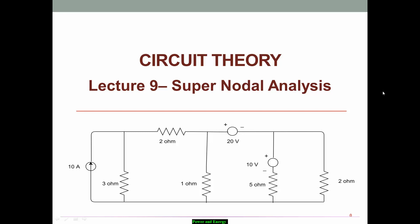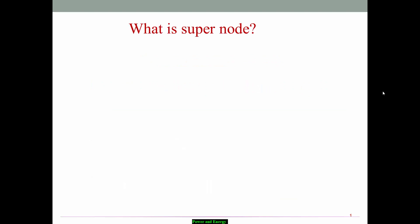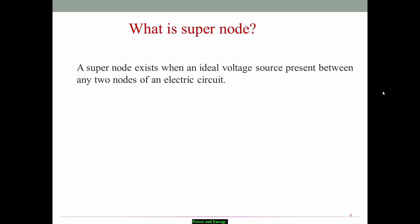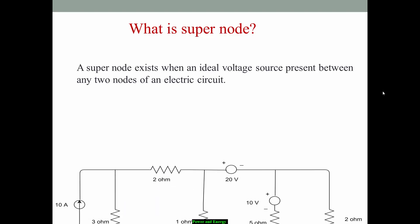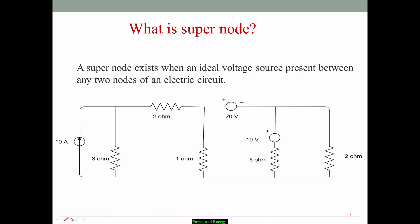Hi everyone, welcome to another lecture on circuit theory. In this session, let us discuss super node analysis. A super node exists when an ideal voltage source is present between any two nodes of an electrical circuit. For example, in this circuit there is a voltage source of 20 volts present between two nodes — this is one node and this is another node.